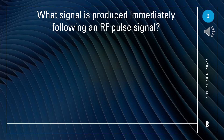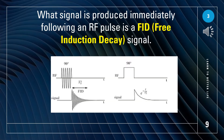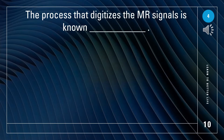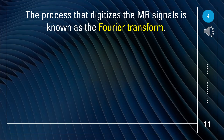What signal is produced immediately following an RF pulse signal? Free induction decay is produced immediately. The process that digitizes the MR signals is known as? That process is called Fourier transform.